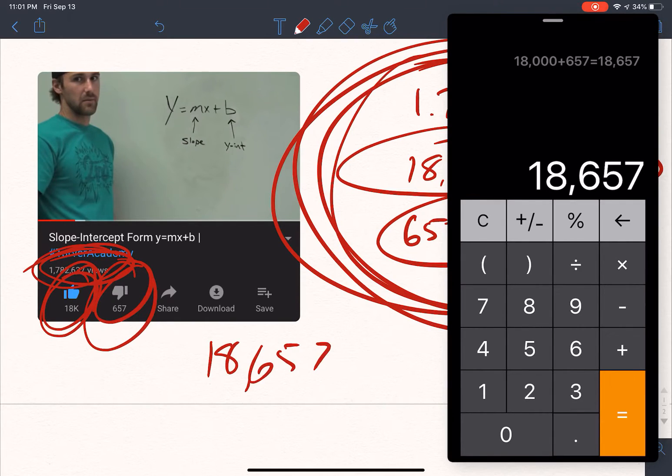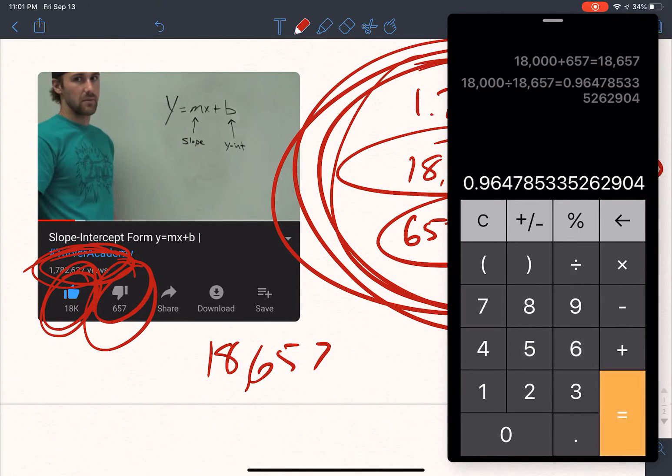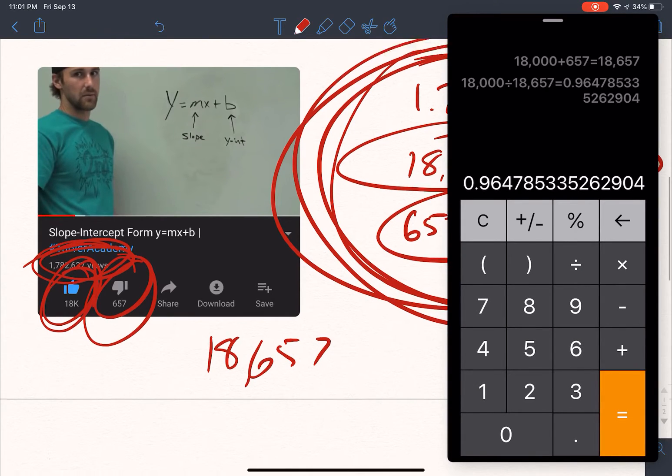Now let's say I want to find out how many people did it help? How many enjoyed the video? Well then I could just divide that by the total. So it'd be, I'd go 18,000 divided by 18,657. So 96.4, 96.4% of the people,